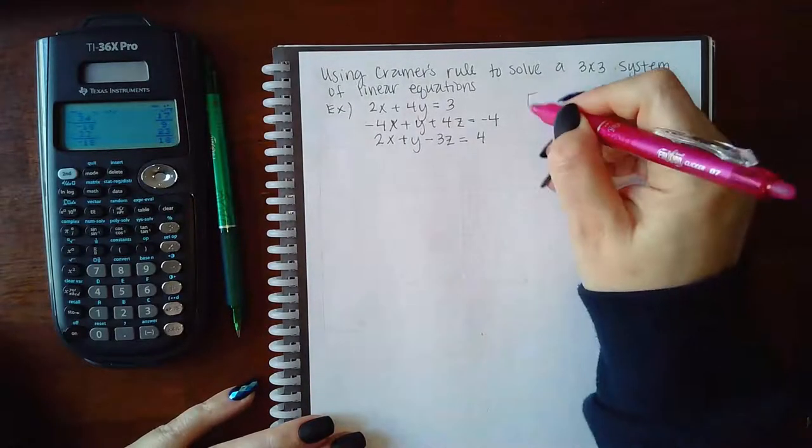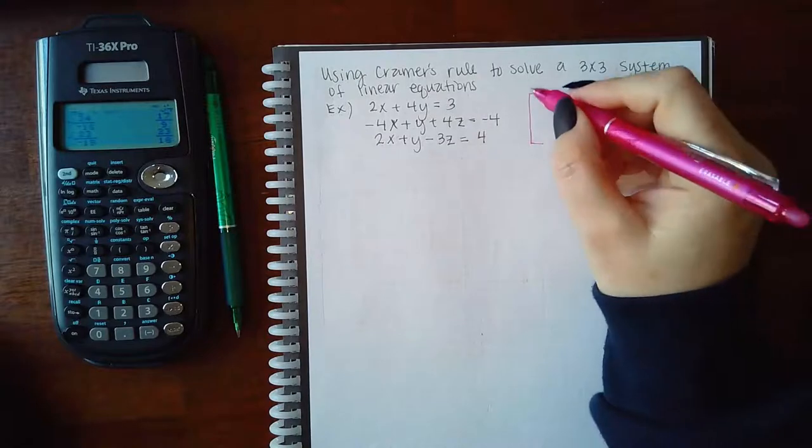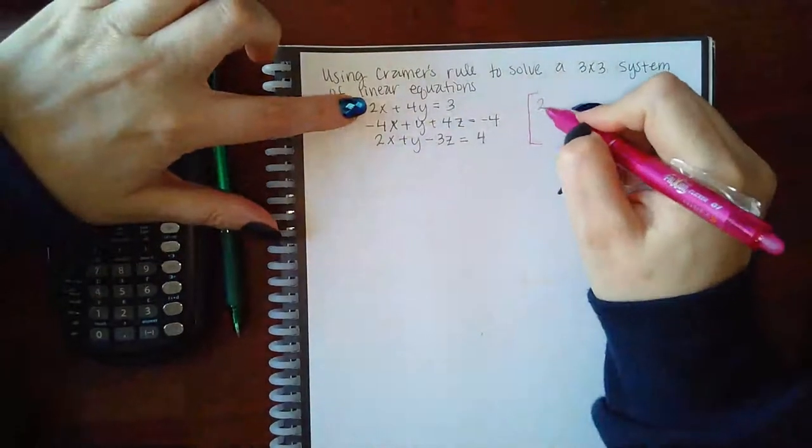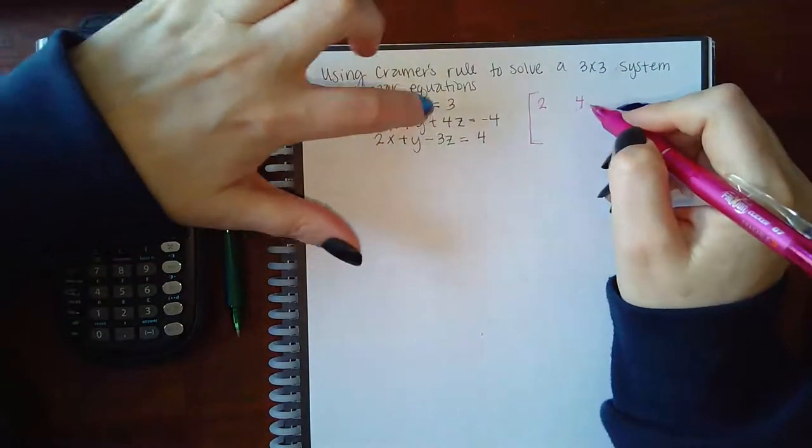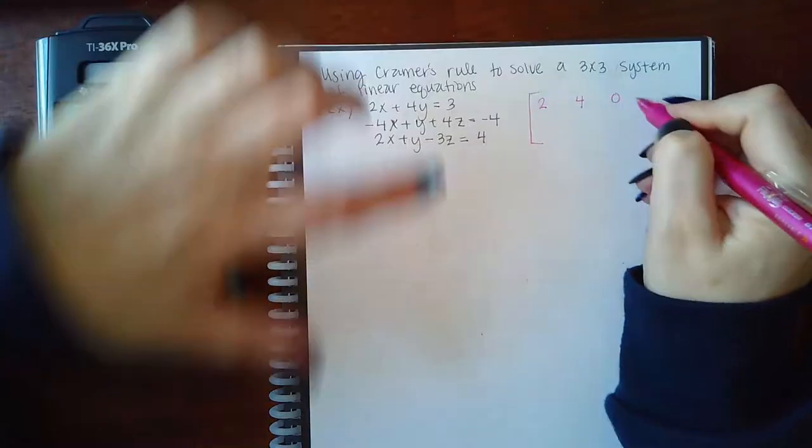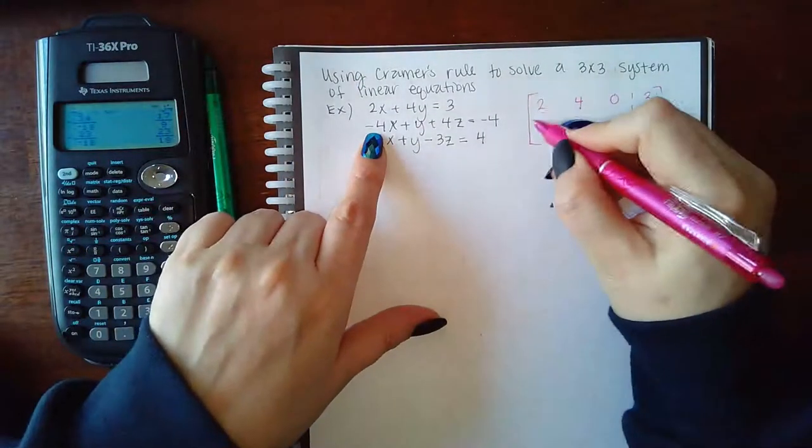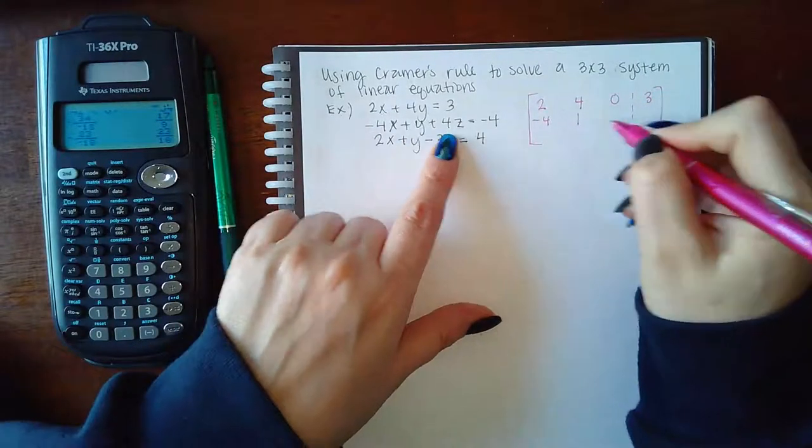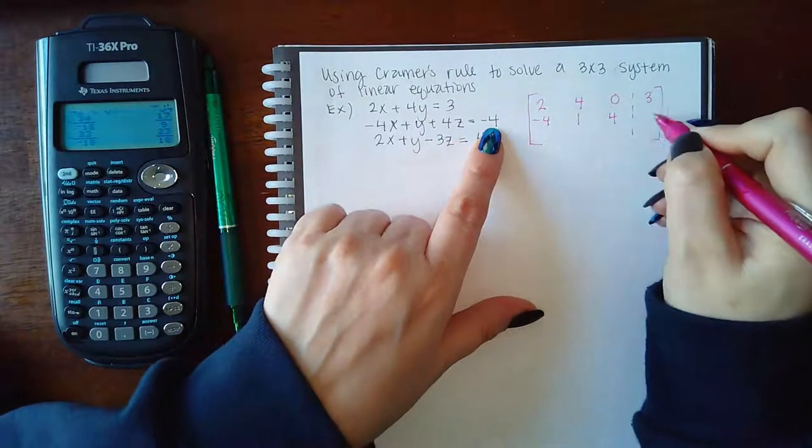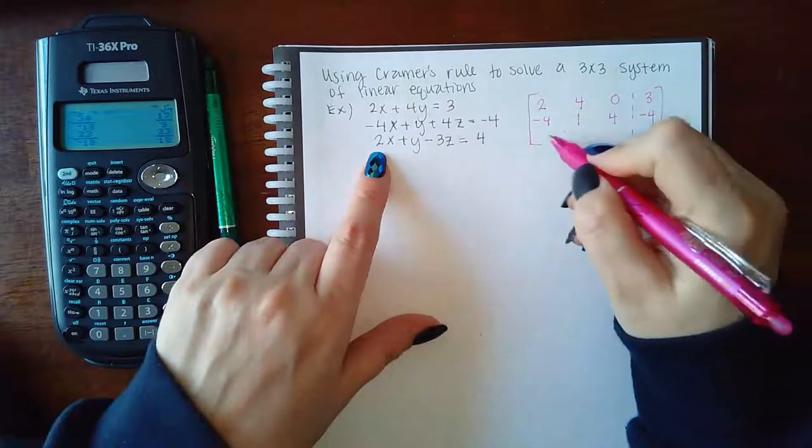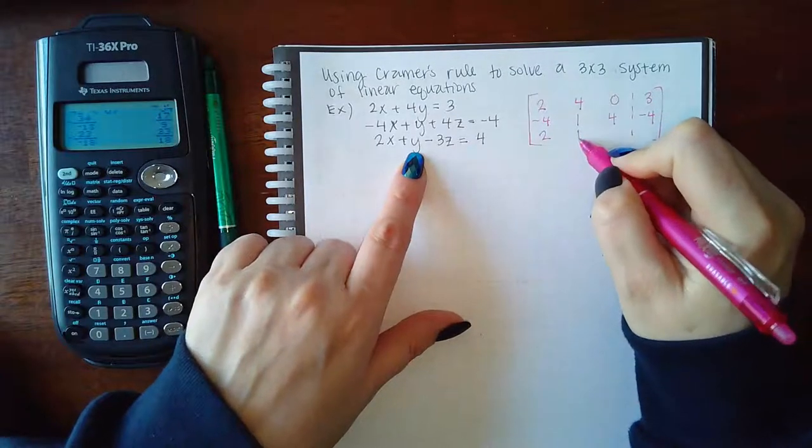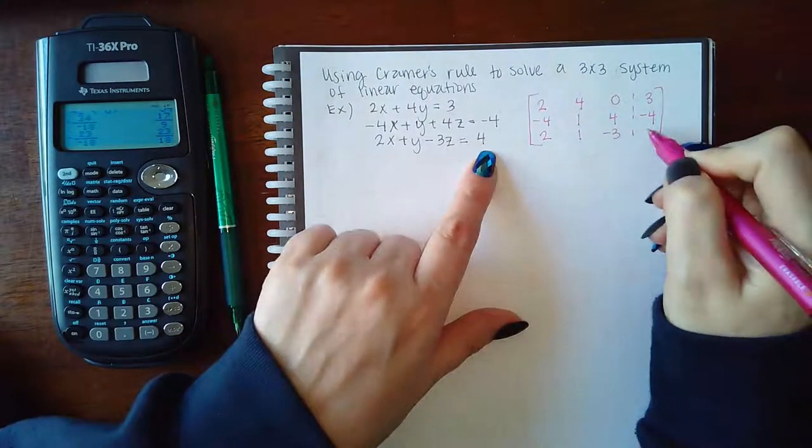But to do it using Kramer's rule is a lot nicer. So let's first put this in the augmented matrix. So you have X coefficient, Y coefficient. There is no Z coefficient, so we're going to plug in a zero. Then we have X coefficient, Y coefficient, Z coefficient, Z coefficient, and our constant. X coefficient, Y coefficient, Z coefficient, and our constant.